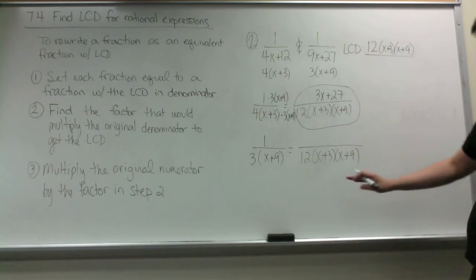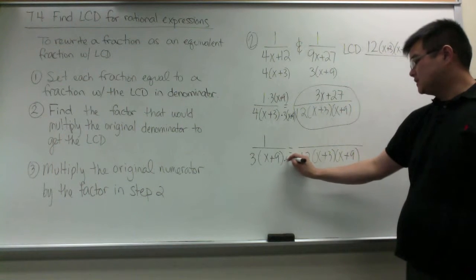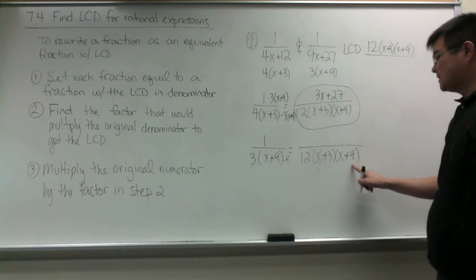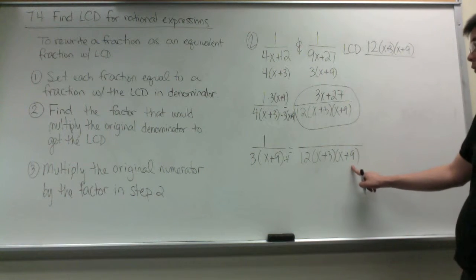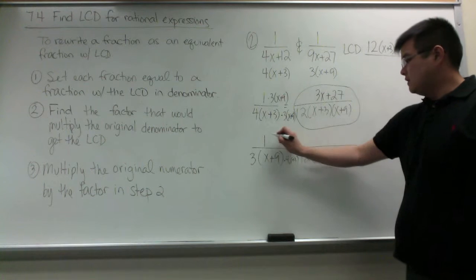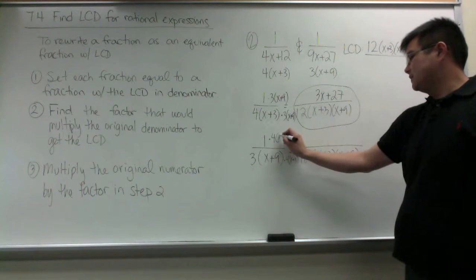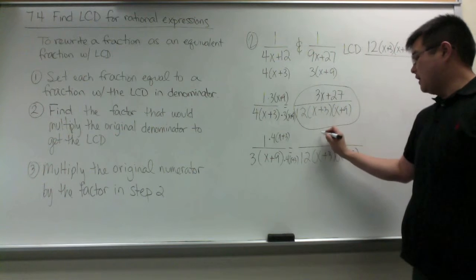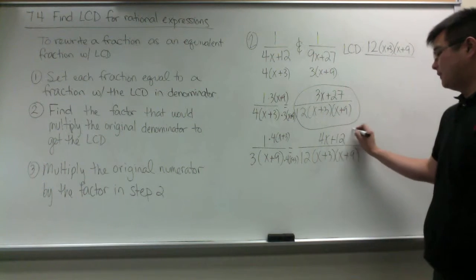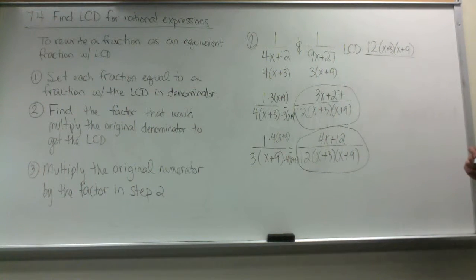In the next part, we multiply by 4 because 3 times 4 is 12. Both denominators already have x plus 9, so we multiply that by 1. We still need to multiply by x plus 3, so we multiply the numerator by 4 times x plus 3. When you distribute the 4, you get 4x plus 12. Those are our equivalent fractions with the common denominator.